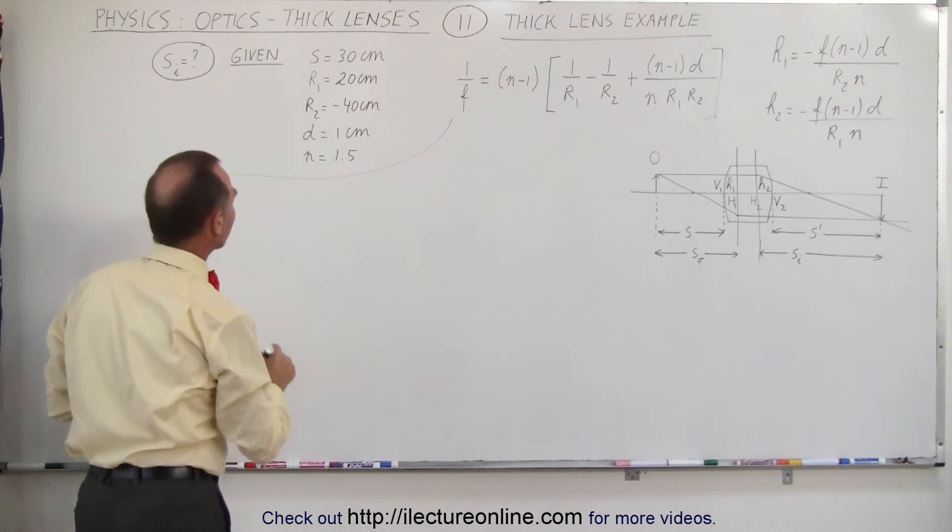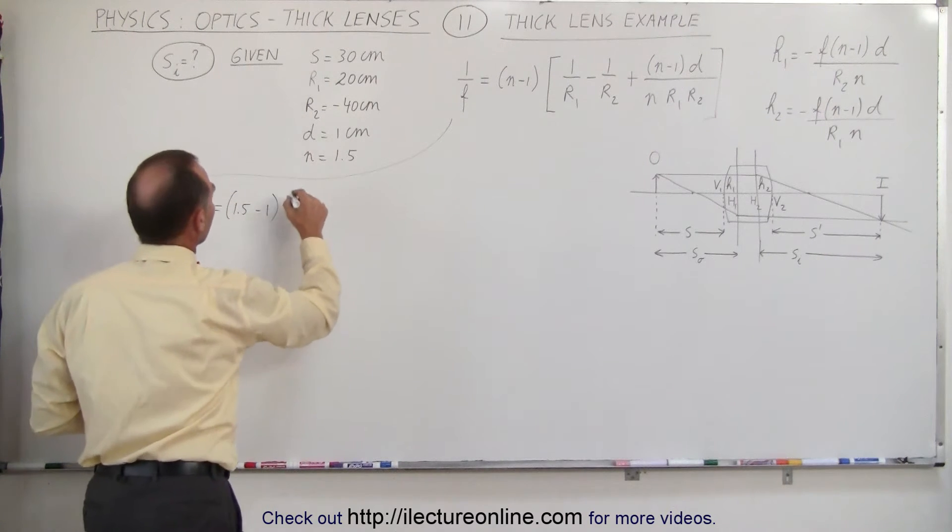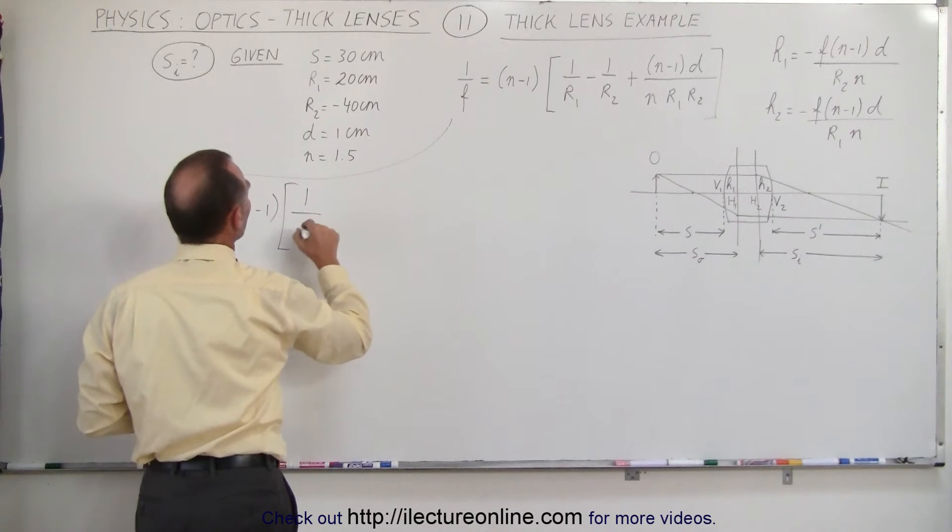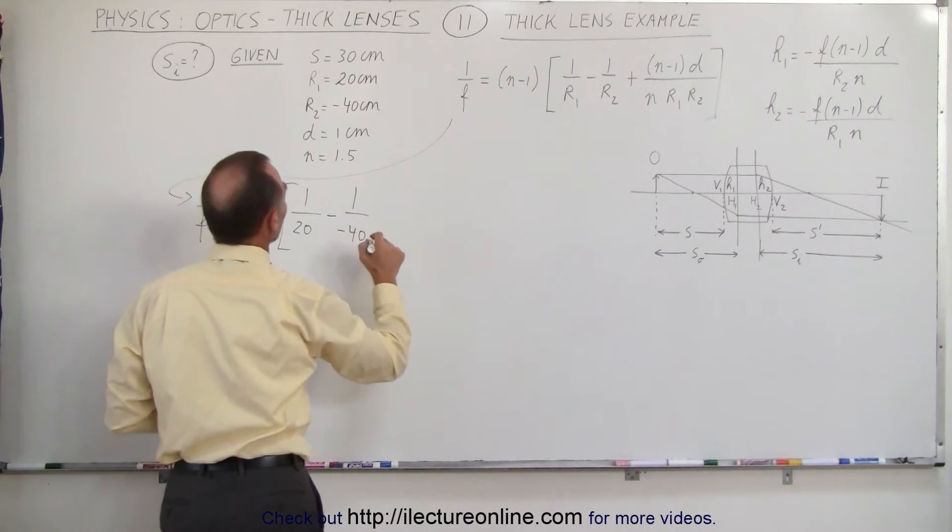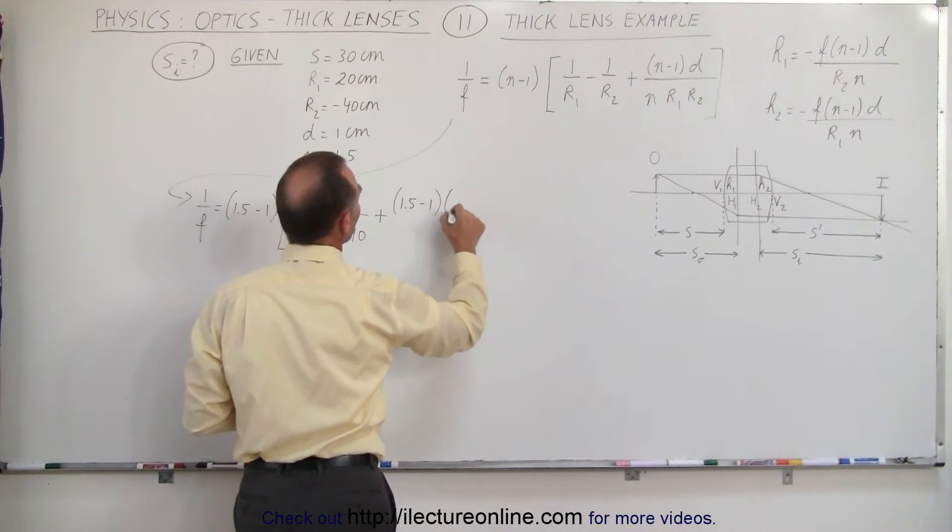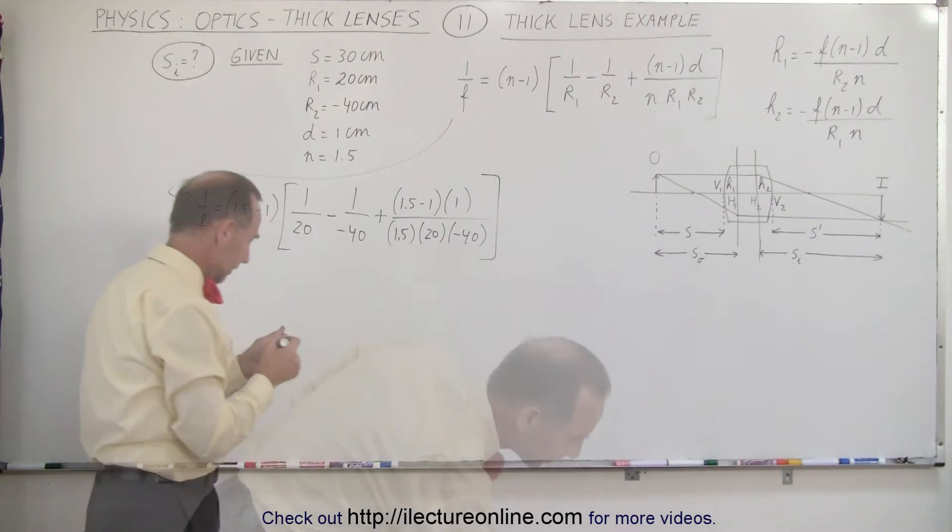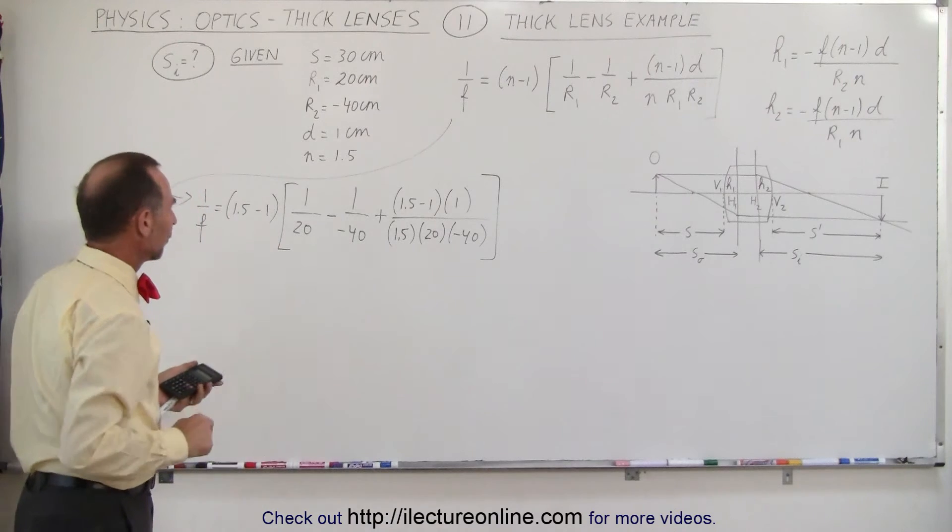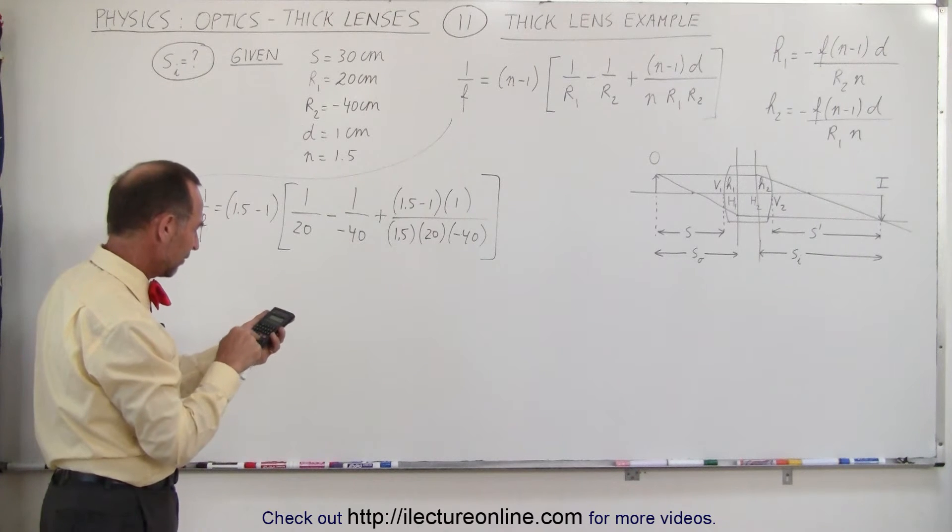Coming up here, to find the focal length, we have 1 over f is equal to 1.5 minus 1 times 1 over 20 minus 1 over a minus 40. Notice that these two negatives will cancel each other out. Then we have plus 1.5 minus 1 times the thickness of the lens 1 divided by 1.5 times 20 and times a minus 40. Again, make sure you put the negative there when it's needed. First of all, we're going to figure out what this is equal to. So we have 0.5 divided by 1200.